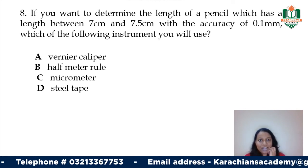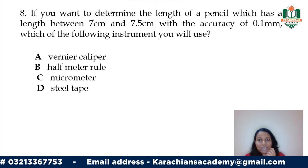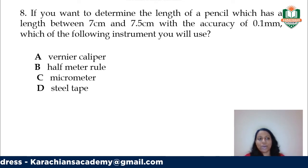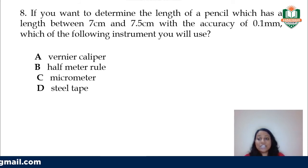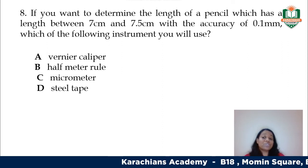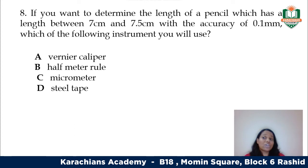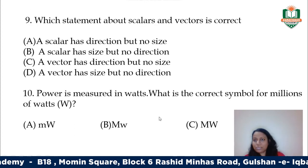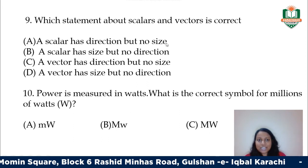If you want to determine the length of a pencil between 7 and 7.5 centimeters with an accuracy of 0.1 millimeter, which instrument do you use? A half-meter ruler is too large, a steel tape is too large, and a micrometer measures only 2.5 to 5 centimeters — too small. The only option left is your vernier caliper.